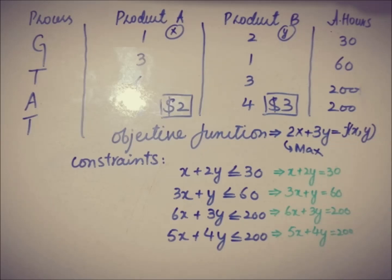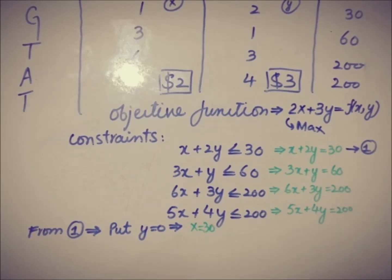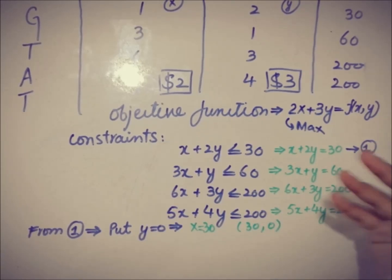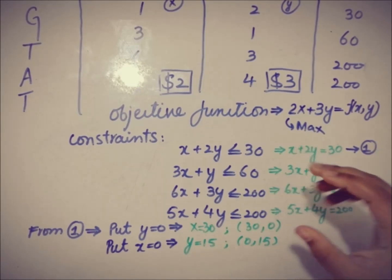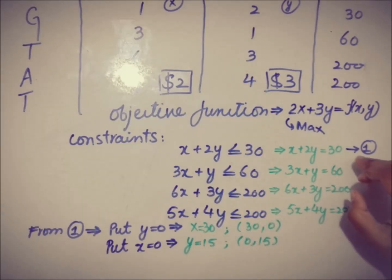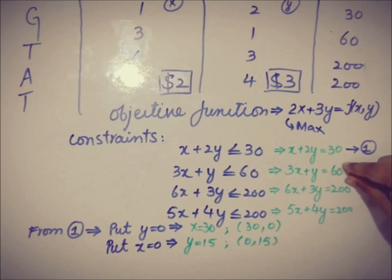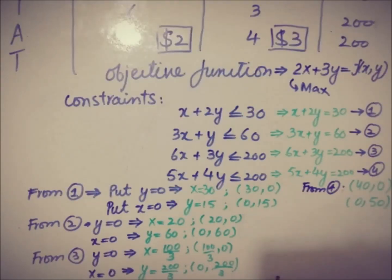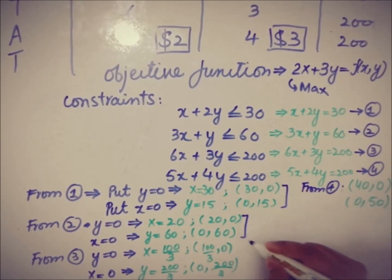Now we can find the x-intercepts. For the first equation, with y equal to zero, x equals 30 — written as the ordered pair (30, 0). For the y-intercept of the first equation, with x equal to zero, y equals 15, giving the pair (0, 15). Moving the same way, we find the x and y intercepts from the second, third, and fourth equalities. So we have four pairs of intercepts from the four constraints.